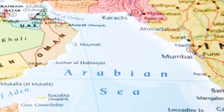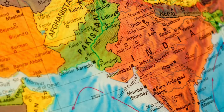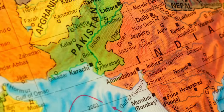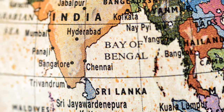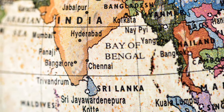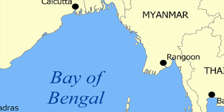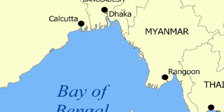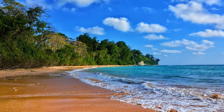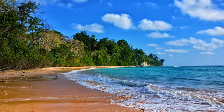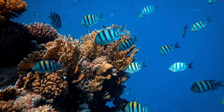The Indus River empties into the Arabian Sea. On the eastern side of the subcontinent is the Bay of Bengal — many rivers from India and Bangladesh drain into this body of water. Also, the Andaman and Nicobar Islands are in this sea. These islands are tropical and surrounded by coral reefs.